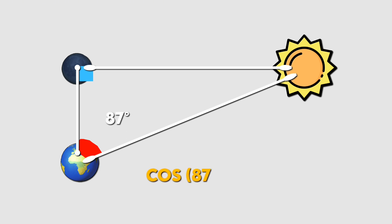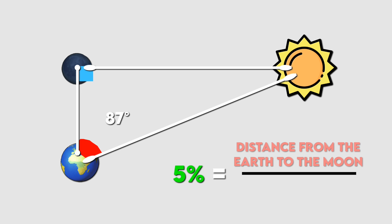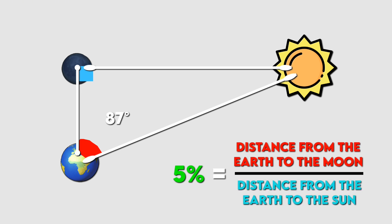Then, he took the cosine of this angle, which was 0.05, or 5%. The cosine function in this case represents the ratio of the distance from the Earth to the moon to the distance from the Earth to the sun. Distance from Earth to moon divided by distance from Earth to sun equals 0.05.